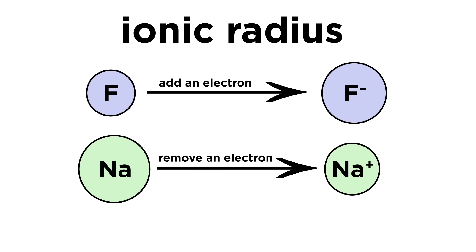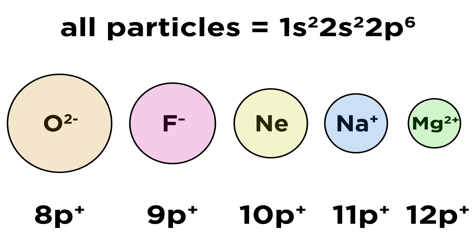Ionic radius is a little different. Electrons repel each other, so adding an electron makes an atom bigger. Taking one away makes it smaller. Ions with the same electron configuration will have their radii decrease as the atomic number increases.